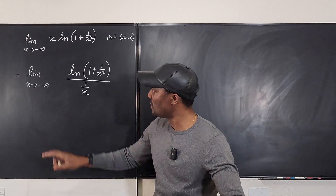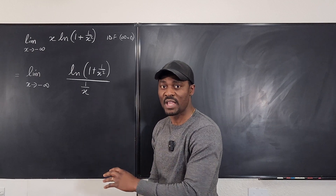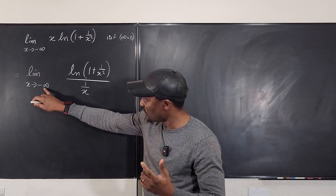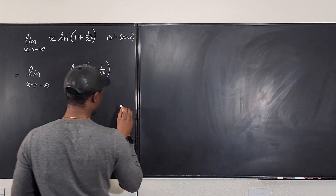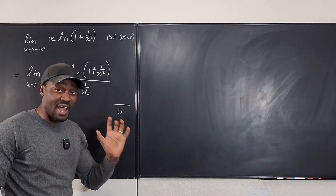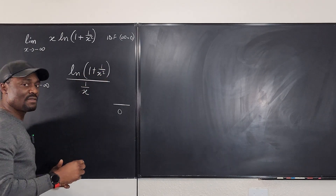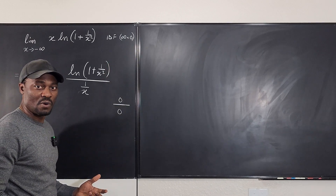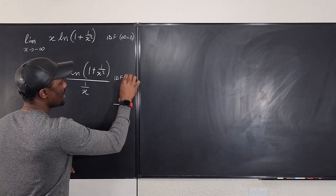That's what you should always do when this is going to infinity and you have something like this. After you've rewritten it this way, you want to check what's going on again. As x goes to negative infinity, the bottom goes to zero. It's the same thing we had before — this is going to go to zero, zero plus one gives us one, and the natural log of one is zero. So it's a case of zero over zero — still an indeterminate form.